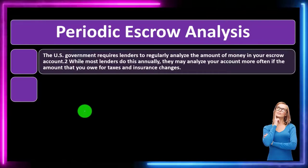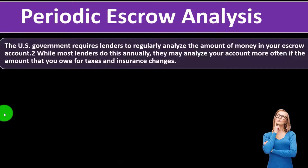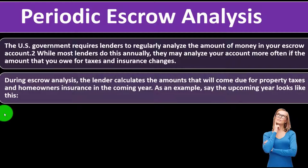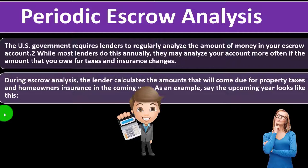The total held in your escrow account is generally included in your monthly mortgage statement or online account. The U.S. government requires lenders to regularly analyze the amount of money in your escrow account — most lenders do this annually, but may do it more often if the amount you owe for taxes and insurance changes. Property taxes or insurance costs going up could change the monthly amount you need to pay, resulting in an adjustment.